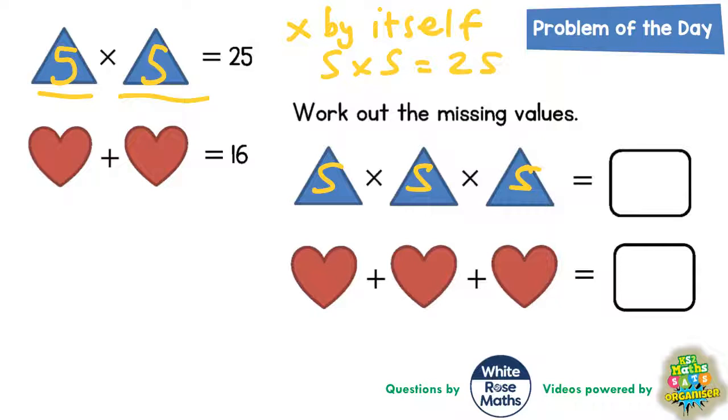So now we just need to work it out. Well 5 times 5 is 25, and then we're trying to times that by 5 again. So we need 25 times 5. Well 5 times 5 is 25, put the 5 in carry the 2. 5 times 2 is 10 plus the 2 is 12. So 5 times 5 times 5 is 125.